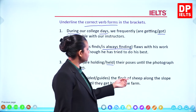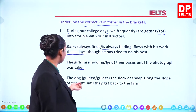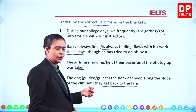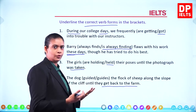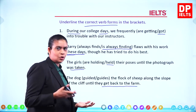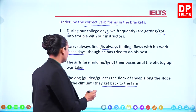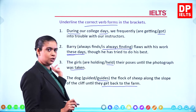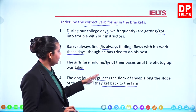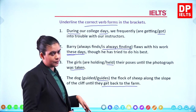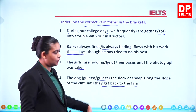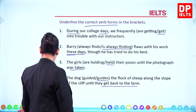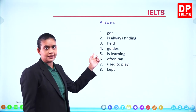'The dog guides the flock of sheep along the slope of the cliff until they get back to the farm.' What does the dog do continuously as a routine or habit? The dog guides. There is no time indicator showing it was in the past, and 'get' is also present tense, so the answer is 'guides.'